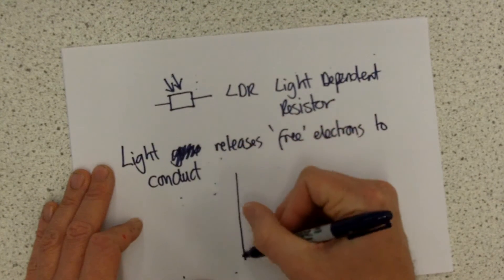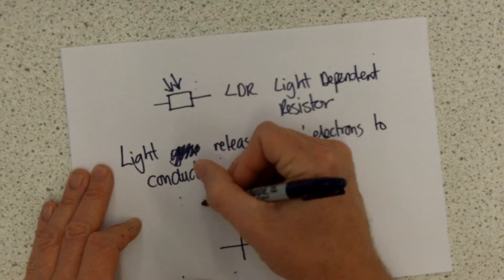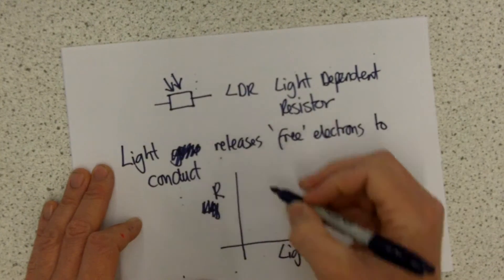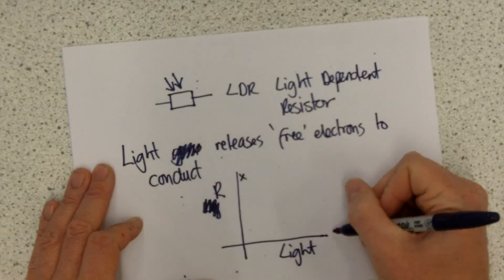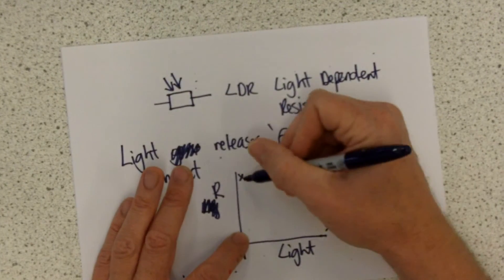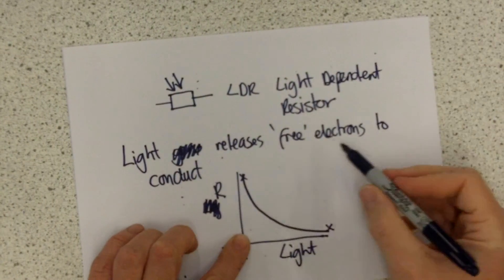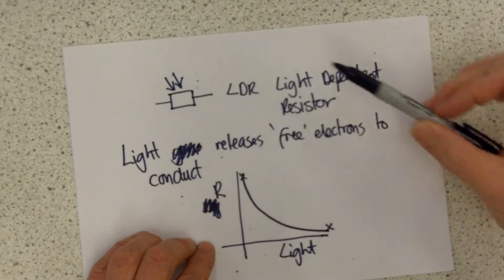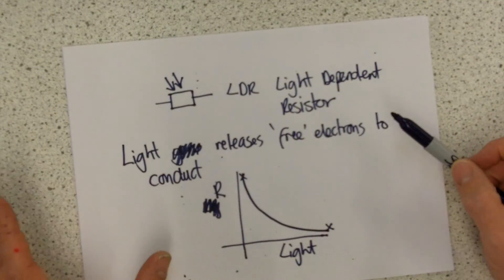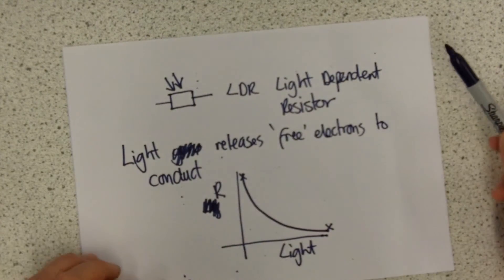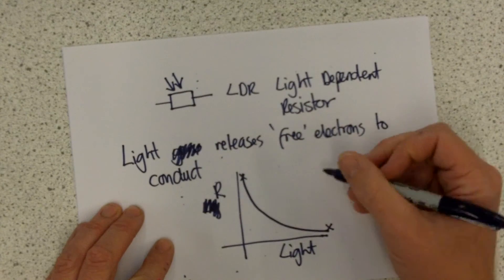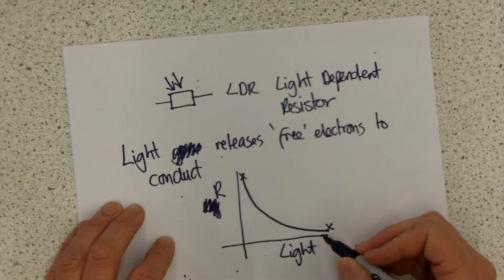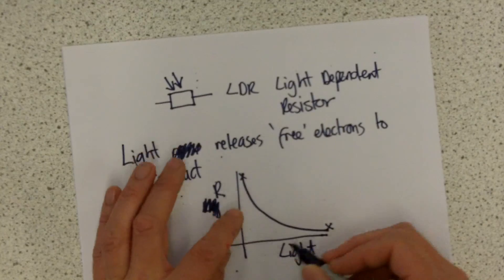When it's dark, the resistance is high. If we plot resistance against light level: when the light level is low, the resistance is high; when the light level is high, the resistance is much smaller because there are more free electrons. Incoming photons of light give energy to electrons to escape from their atoms, and those electrons are then free to be charge carriers to move around in the circuit. This characteristic needs to be remembered — it's an inverse proportion relationship. When the light gets bigger, the resistance gets smaller, and vice versa.